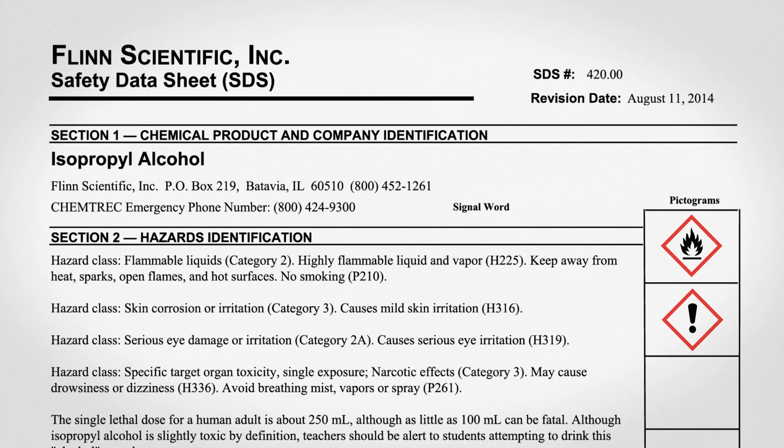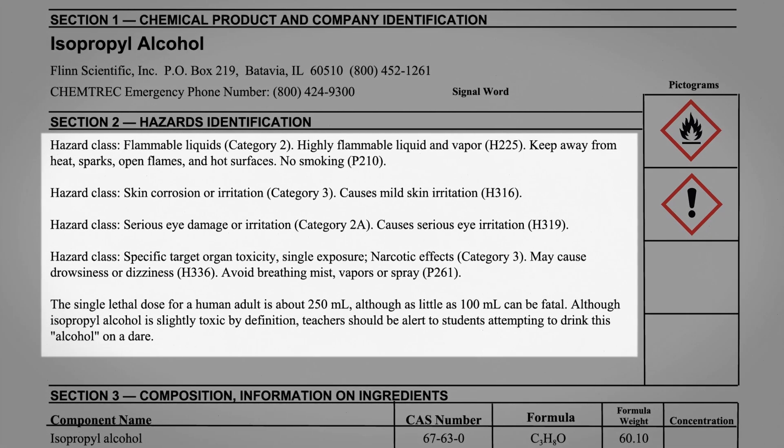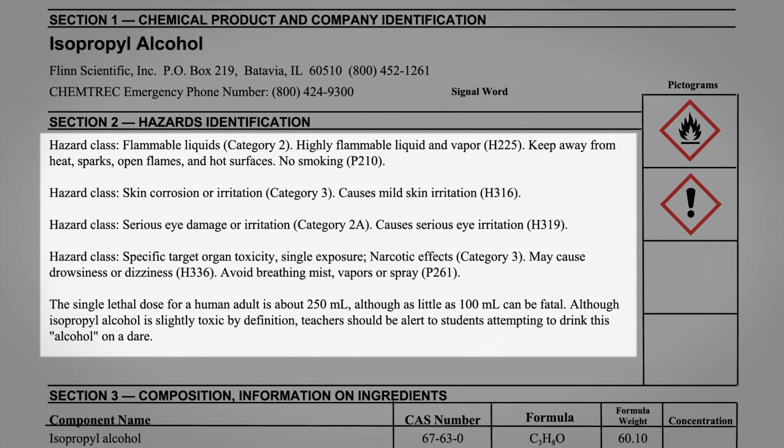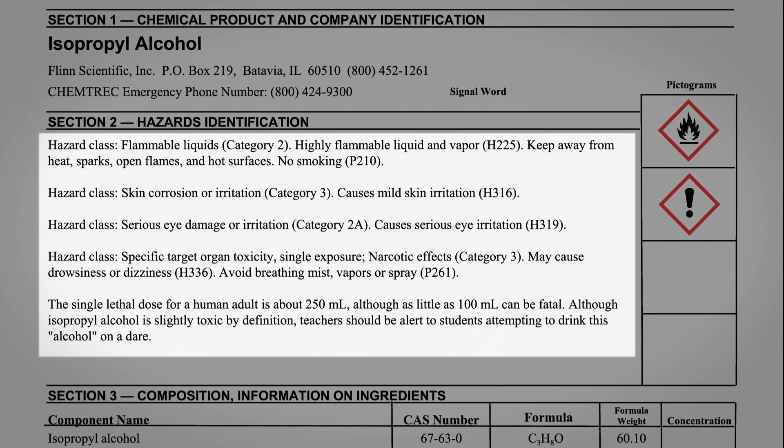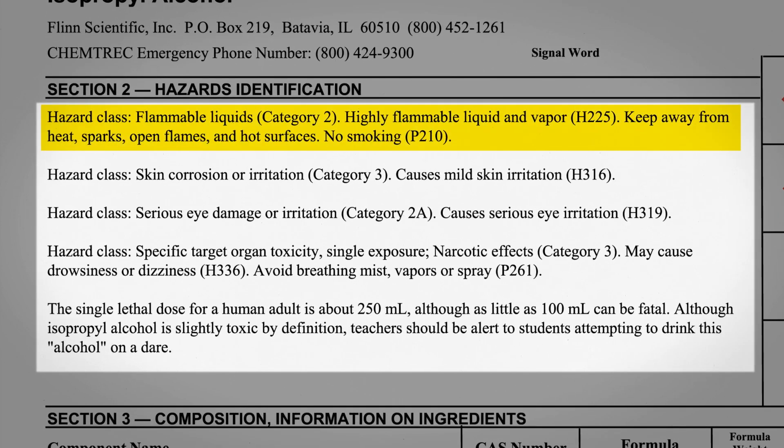The third and most detailed way of identifying hazards is by actually naming specific hazards or hazard classes, described by hazard statements. Isopropyl alcohol has four principal hazards. One: it is a highly flammable liquid and vapor — keep away from heat, sparks, open flames, and hot surfaces. No smoking.